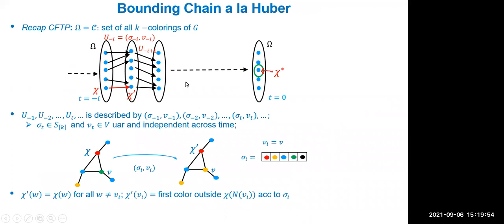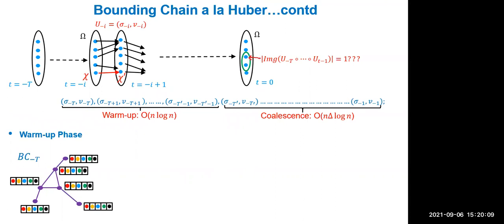The warmup phase runs for n·log(n) steps because by the coupon collector problem, with very high probability all vertices are updated at least once within that time. After the warmup, every vertex has a list of size Delta plus one. The containment invariant is maintained throughout: since the max degree is at most Delta, any valid coloring at a vertex can always find at least one color in the list of size Delta plus one that doesn't appear among its neighbors.